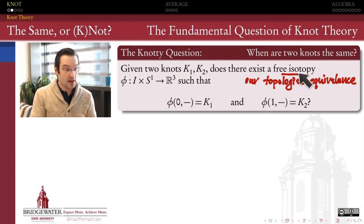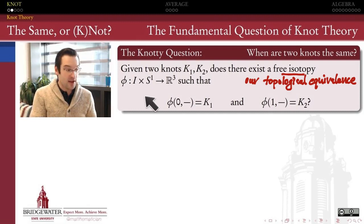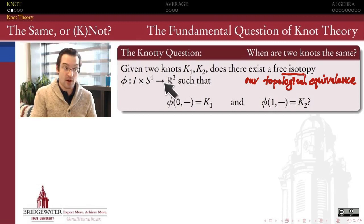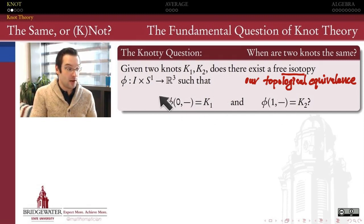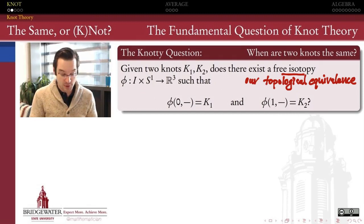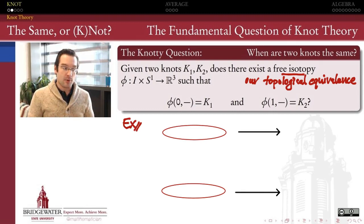For most knot theorists, the notion of equivalence we want is free isotopy. Two knots are going to be equivalent if there is a continuous function from the circle cross the interval into R³, such that when the parameter on this interval is zero the function restricts to the knot K₁, and when the parameter is one we get the knot K₂.